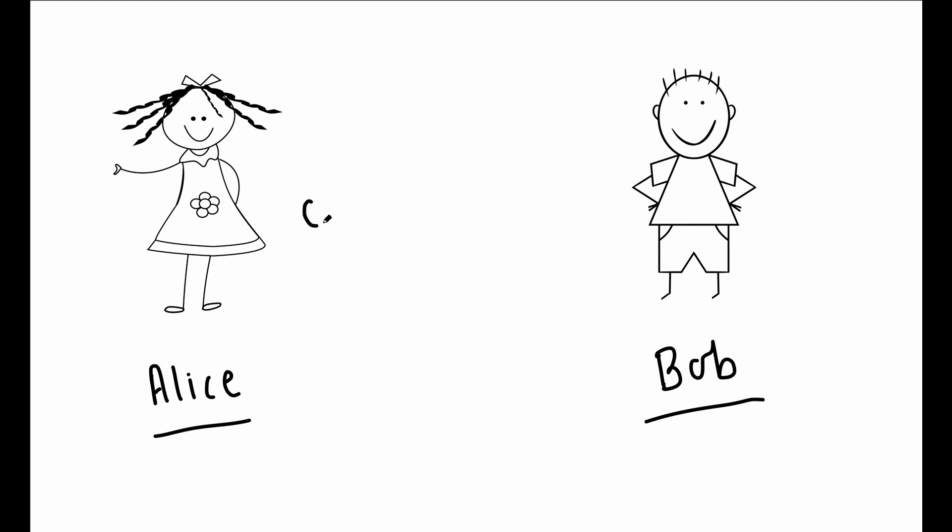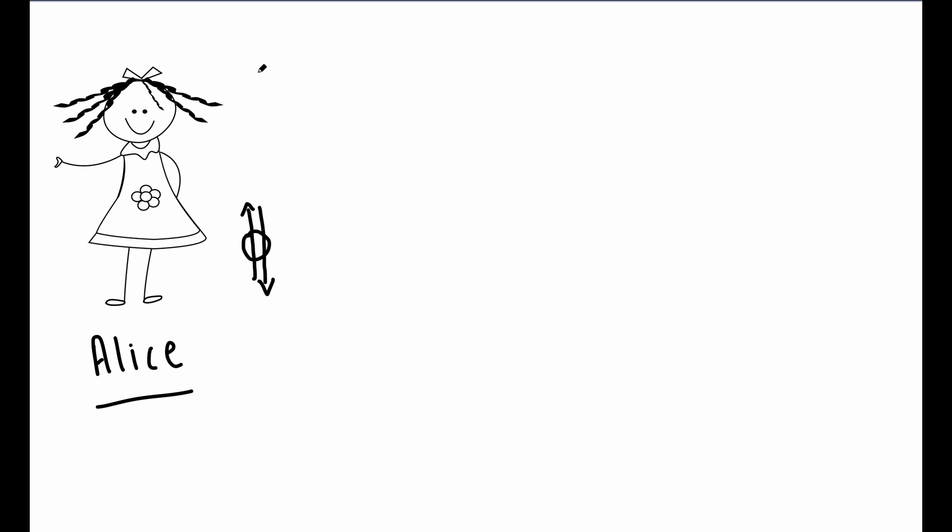To start off, Alice has an electron and Bob also has an electron. These two electrons are in entangled state ket beta 00. Alice takes another electron and changes its state to ket psi, which is equal to alpha ket 0 plus beta ket 1, where her secret message is encrypted in numbers alpha and beta.